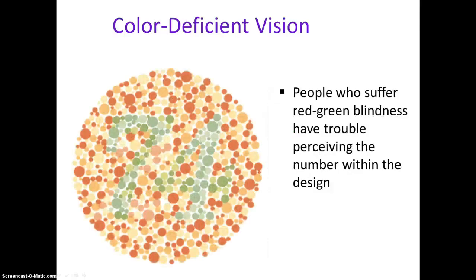So when you think about people who have color deficiencies, usually that's coming from that opponent process theory. Red and green go together. So people who suffer red-green blindness, they have trouble perceiving the number within the design. This number here is 74. Can you perceive it? And that's because maybe they're having trouble with that red-green opponent process. Yellow, blue would be another one. And generally, people don't have a problem with white and black.